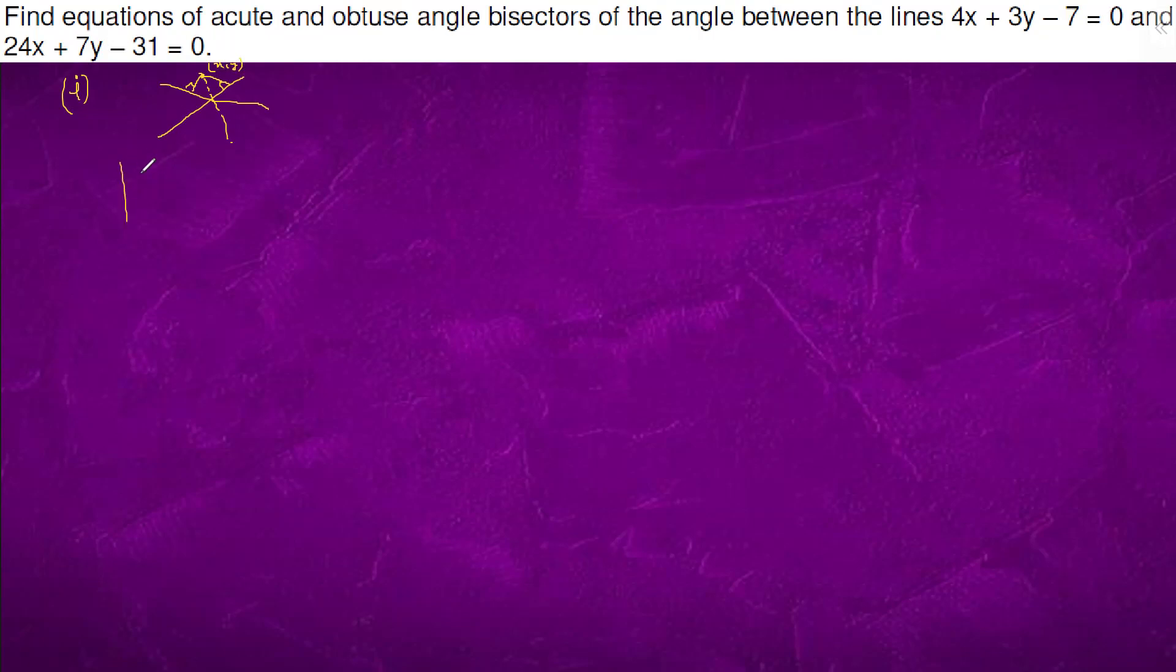So can we say that 4x plus 3y minus 7 upon square root of a square plus b square which is 5, this is equal to mod of 24x plus 7y minus 31 upon square root of 576 plus 49, 625 which is 25. This is it.